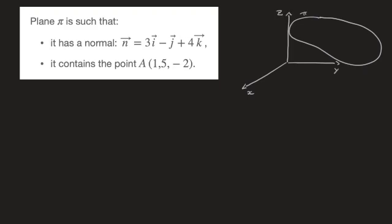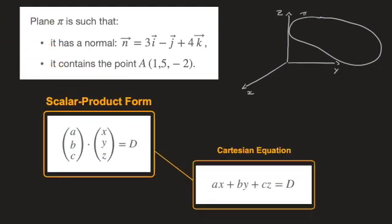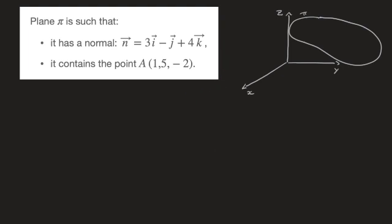In this video, I'm going to show you how to find a plane's equation in scalar product form, as well as how to use that result to find its equation in Cartesian form. For that, I'm going to use what I wrote here, in which I say that a plane called pi is such that it has a normal n equal to 3i minus j plus 4k, and it contains the point A whose coordinates are 1, 5, negative 2. To help us visualize what we're dealing with, I've drawn a generic plane in 3D space here.